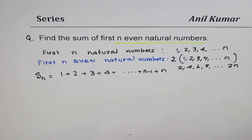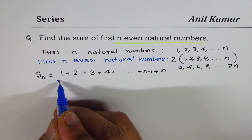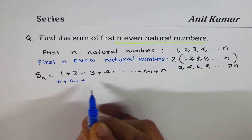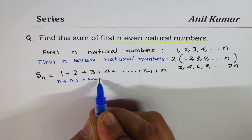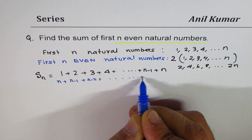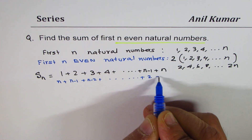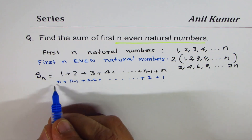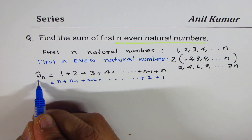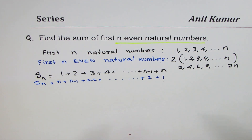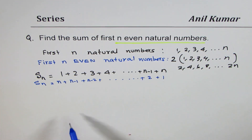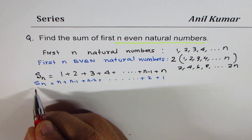I could also write these numbers in reverse order: n + (n−1) + (n−2) + ... + 2 + 1. I have written the same series in reverse order, and the sum remains the same.